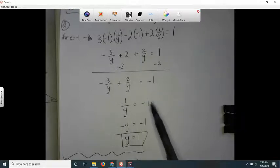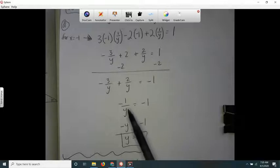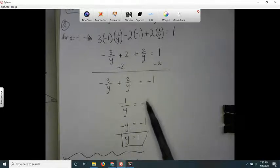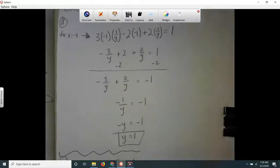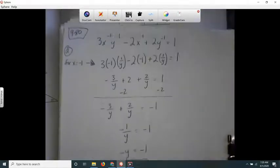The reciprocal of the left hand side is just negative y, but the reciprocal of the right hand side, the reciprocal of negative 1, is still just negative 1. And then divide both sides by negative 1, so y equals 1. That's just how I did it.